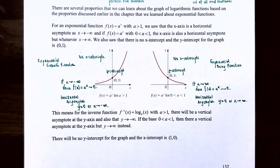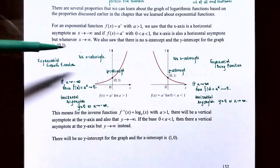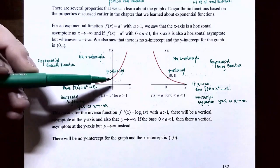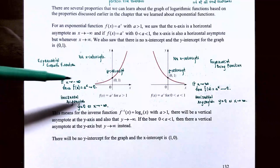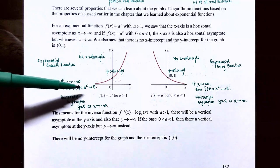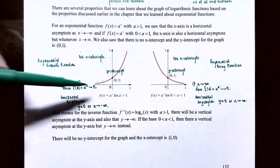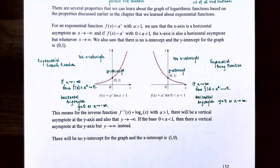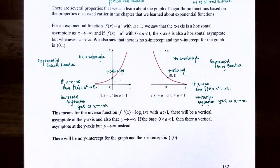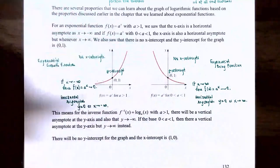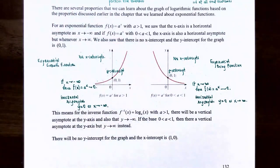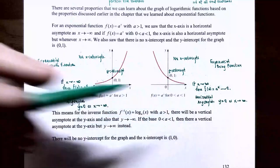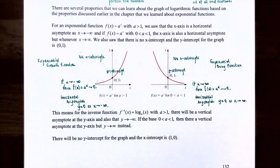The graph on the left is for an exponential growth function. Notice there are no x-intercepts and the y-intercept is 0 comma 1. As x approaches negative infinity, the y values approach 0, because the horizontal asymptote is y equals 0. The graph on the right is for exponential decay functions, where the base is between 0 and 1. There are still no x-intercepts, the y-intercept is 0 comma 1, and as x approaches positive infinity the y values approach 0, the horizontal asymptote.